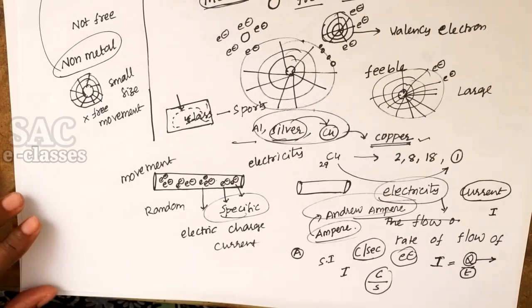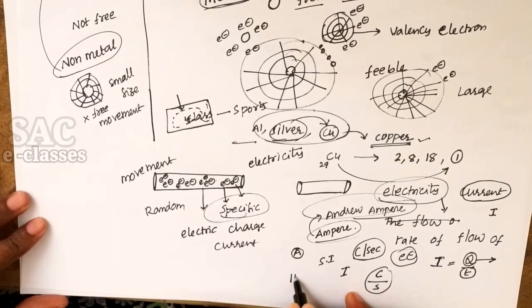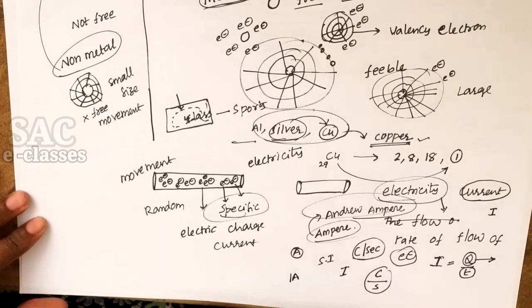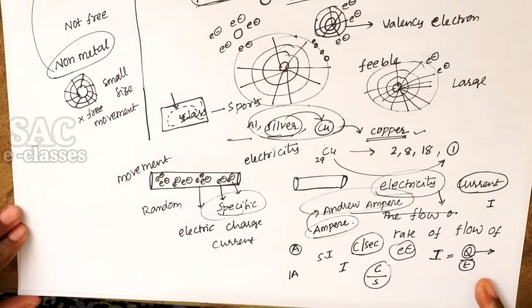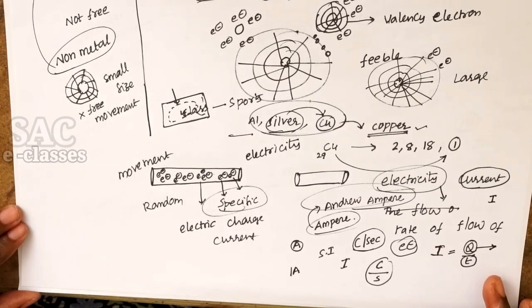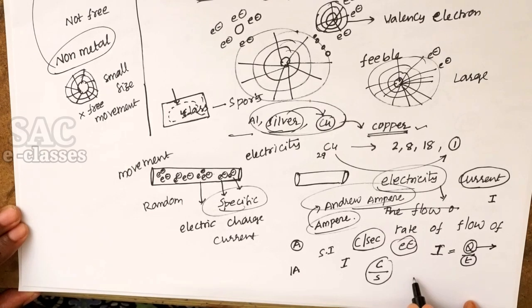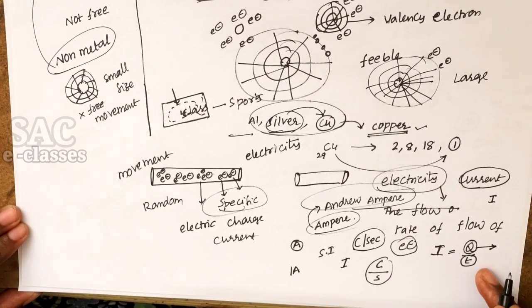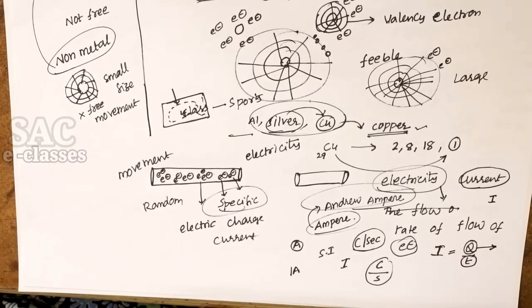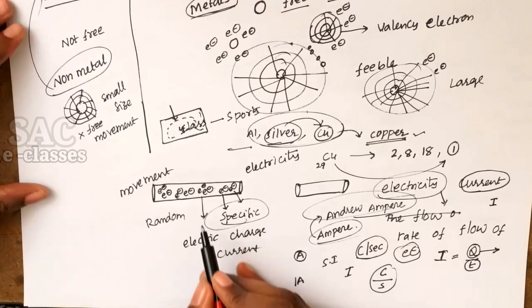One ampere of current is said to flow when one coulomb of charge is transferred from one point to another in one second of time.